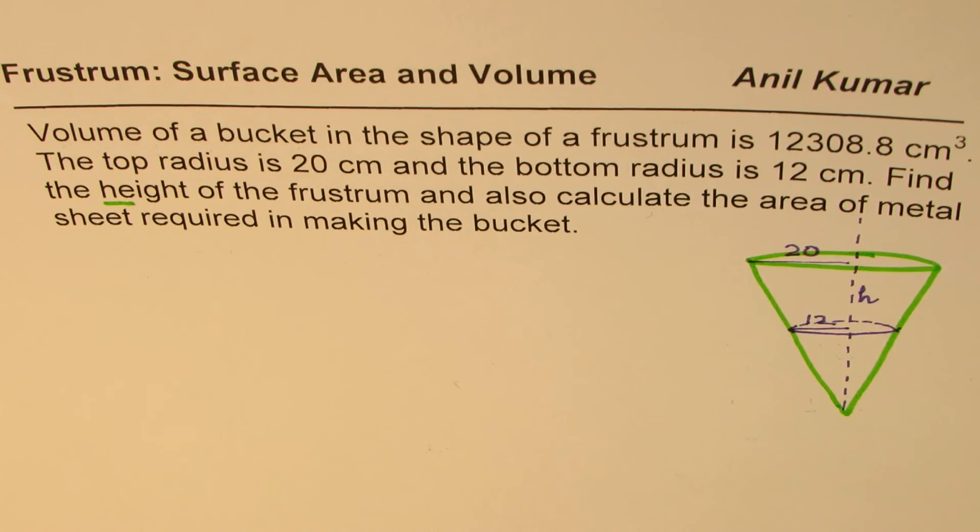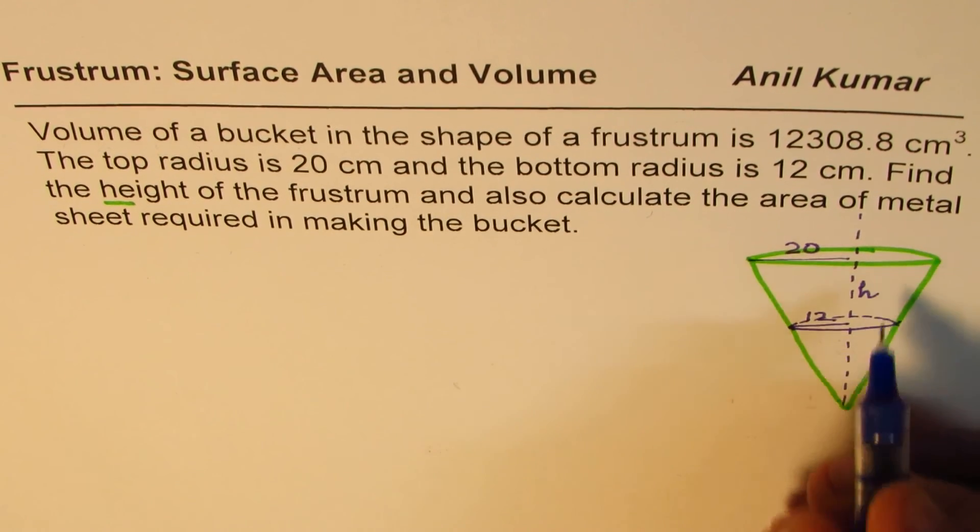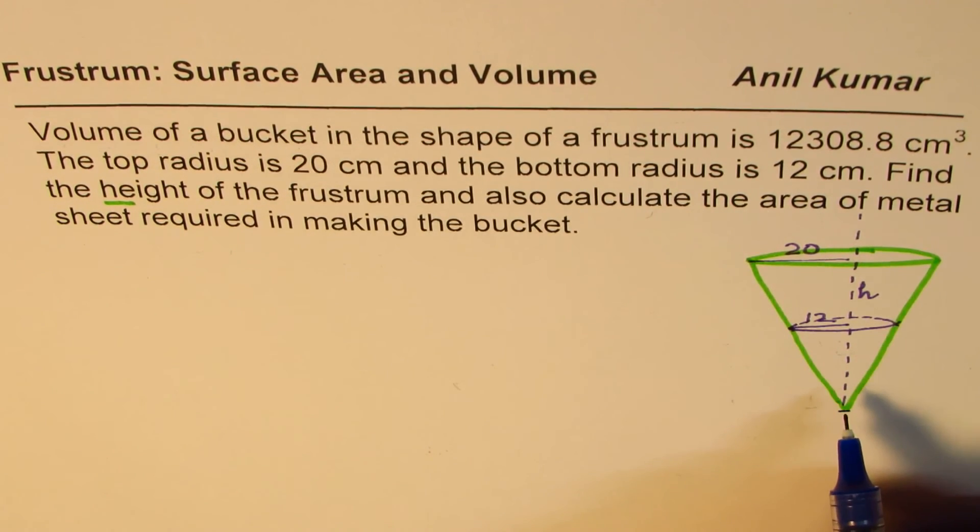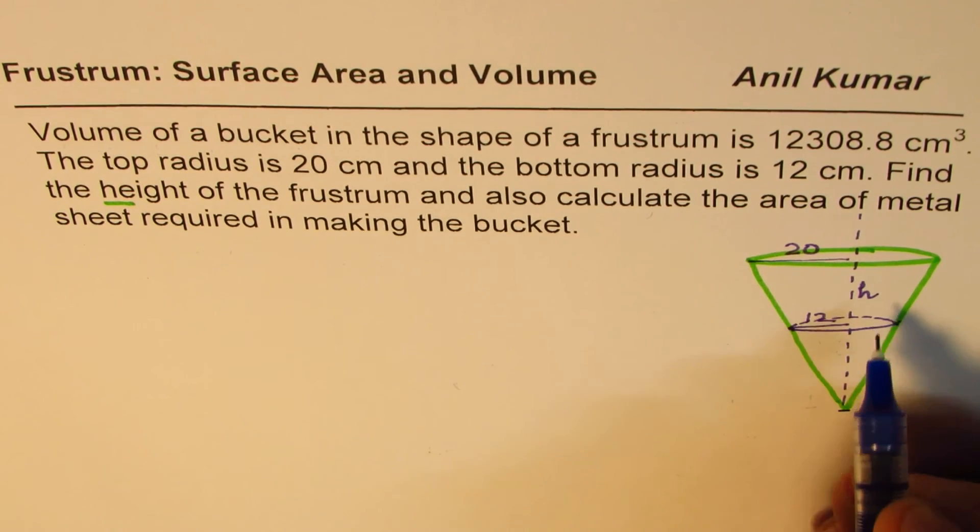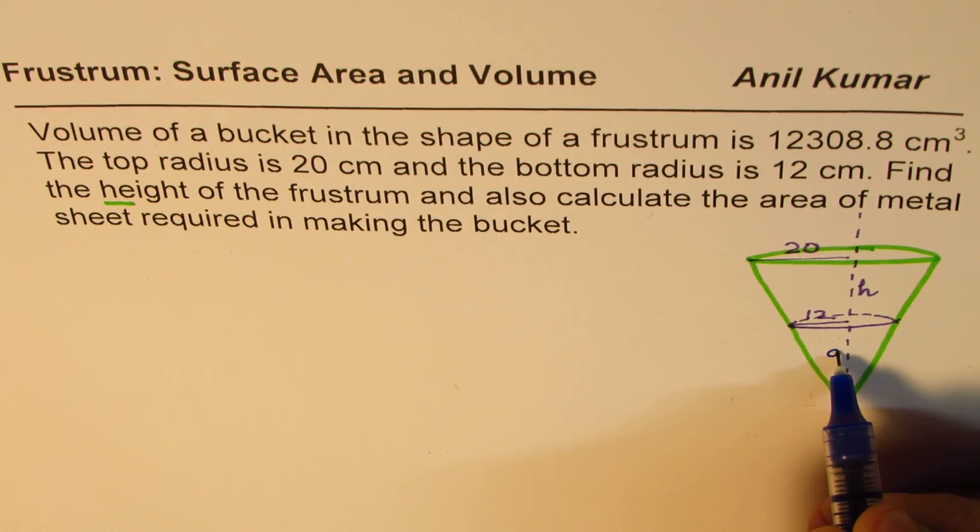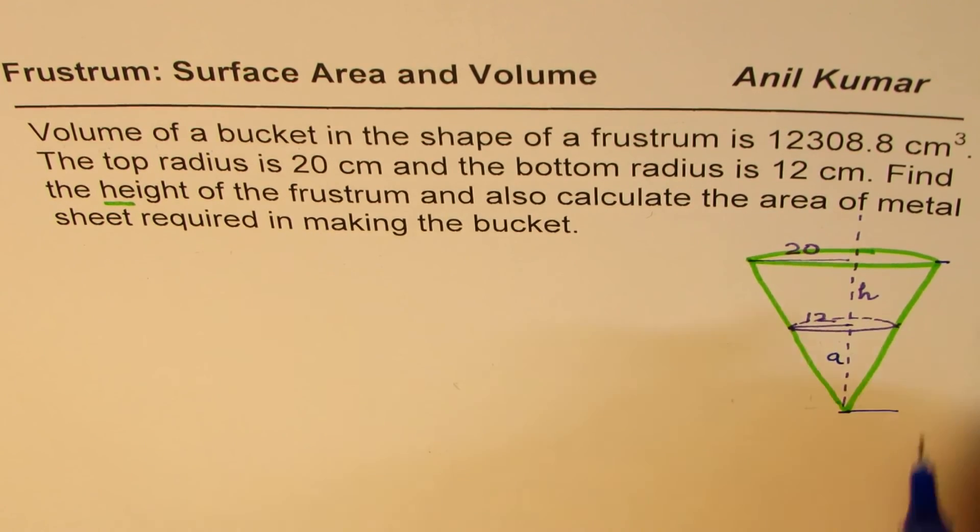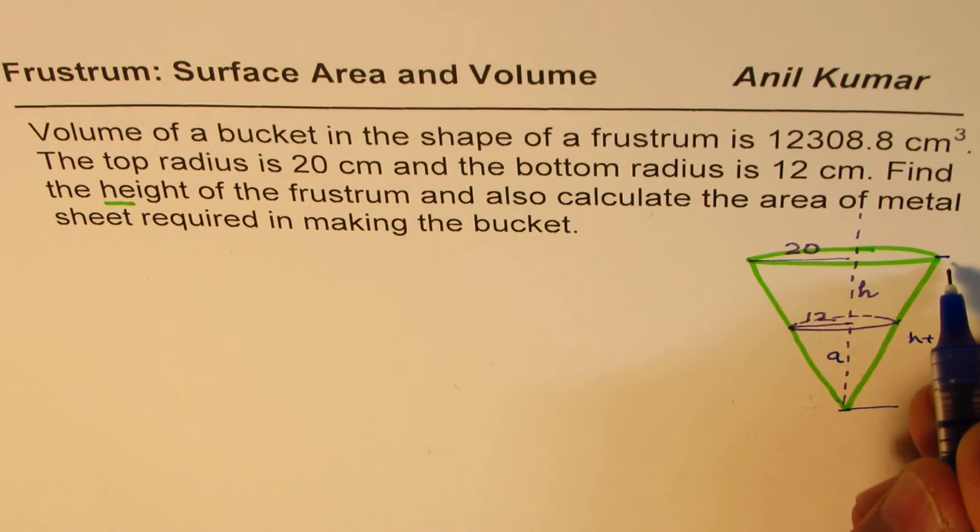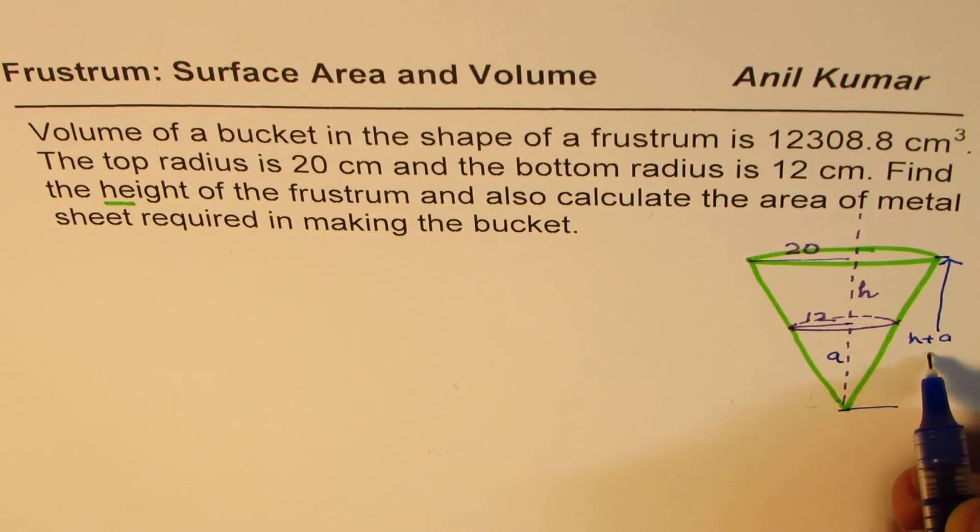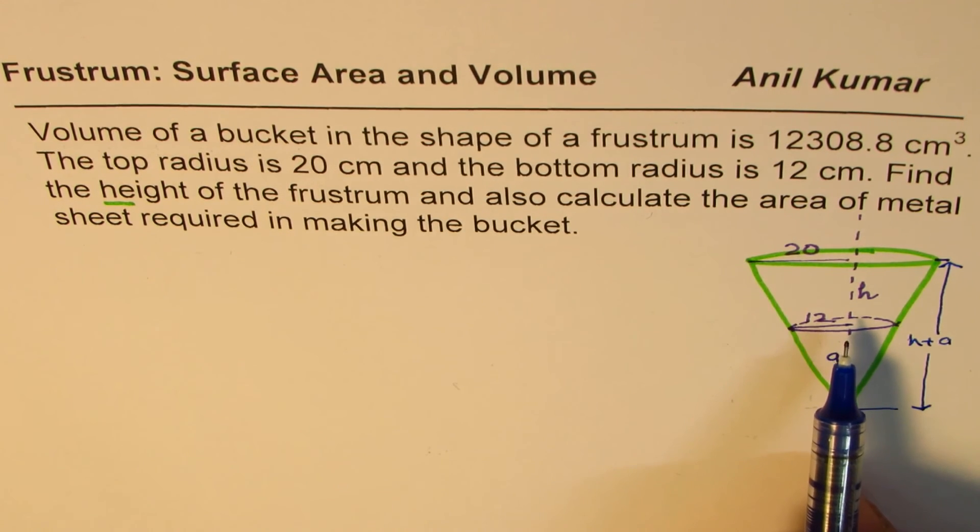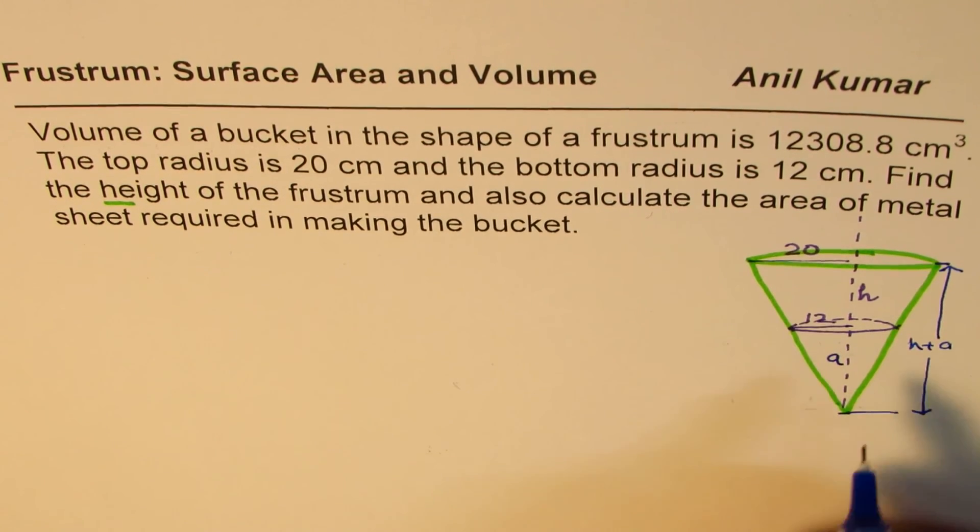Let's see how to do it. I could put a formula for frustum and solve it straight away, but I'm not going to do that. I'm going to derive the formula in this case so that those who don't understand the formula can actually understand the solution. Let me assume that this portion which has been cut off has a height of A. So let this be height of A. In that case, the total height of this cone would have been H plus A. I'm trying to solve this question from basic principles, not by using the formula. If you know the formula, you can always use it.